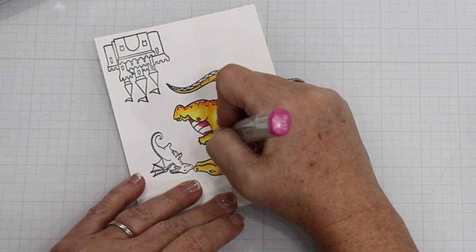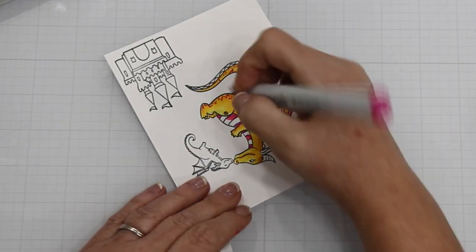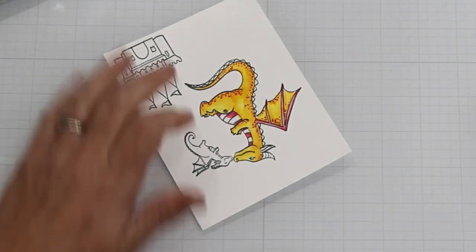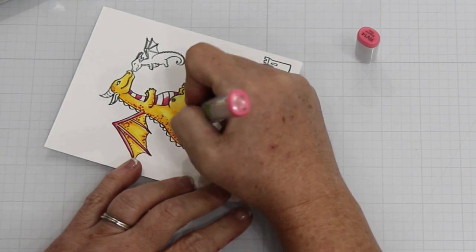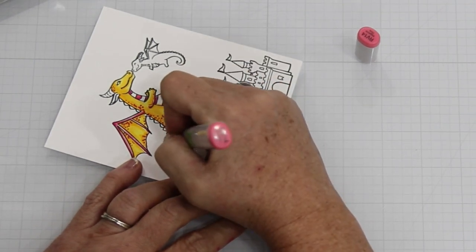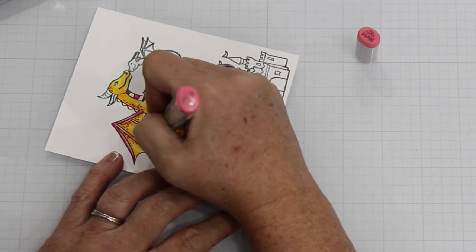So I mentioned that this is part of a hop. All of the participants are in the description box below, as well as all of the products that I used and the products from the new release. That way, you have no problem finding that. So if you're interested in anything that I've used, please look in the description box for the participants.